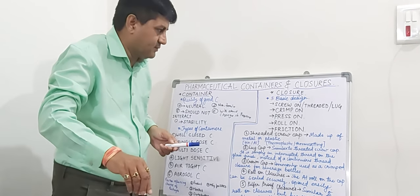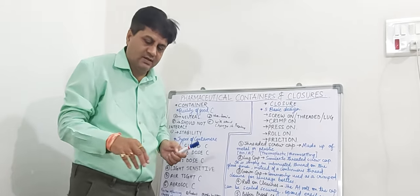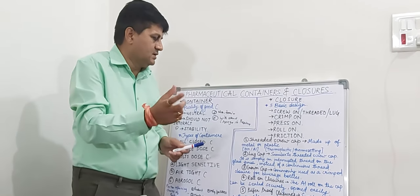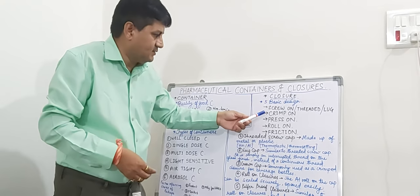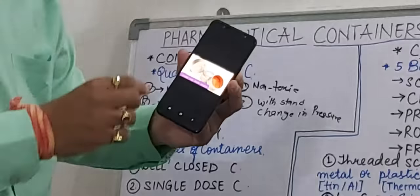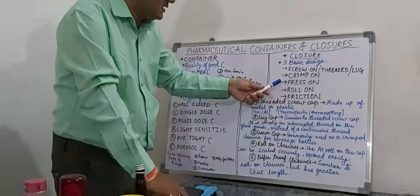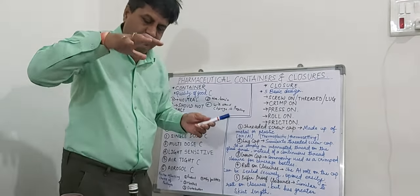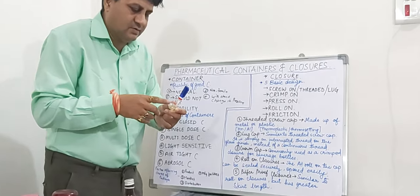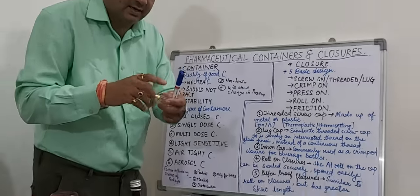The screw-on or threaded closure has multiple threads, while the lug form has only a single interrupted thread. The crimp-on closure is made of aluminum and contains a plastic or polyethylene liner inside it. The press-on closure requires pressing to apply. The roll-on closure has a ball available in it, and we have to roll it to release the content from it.